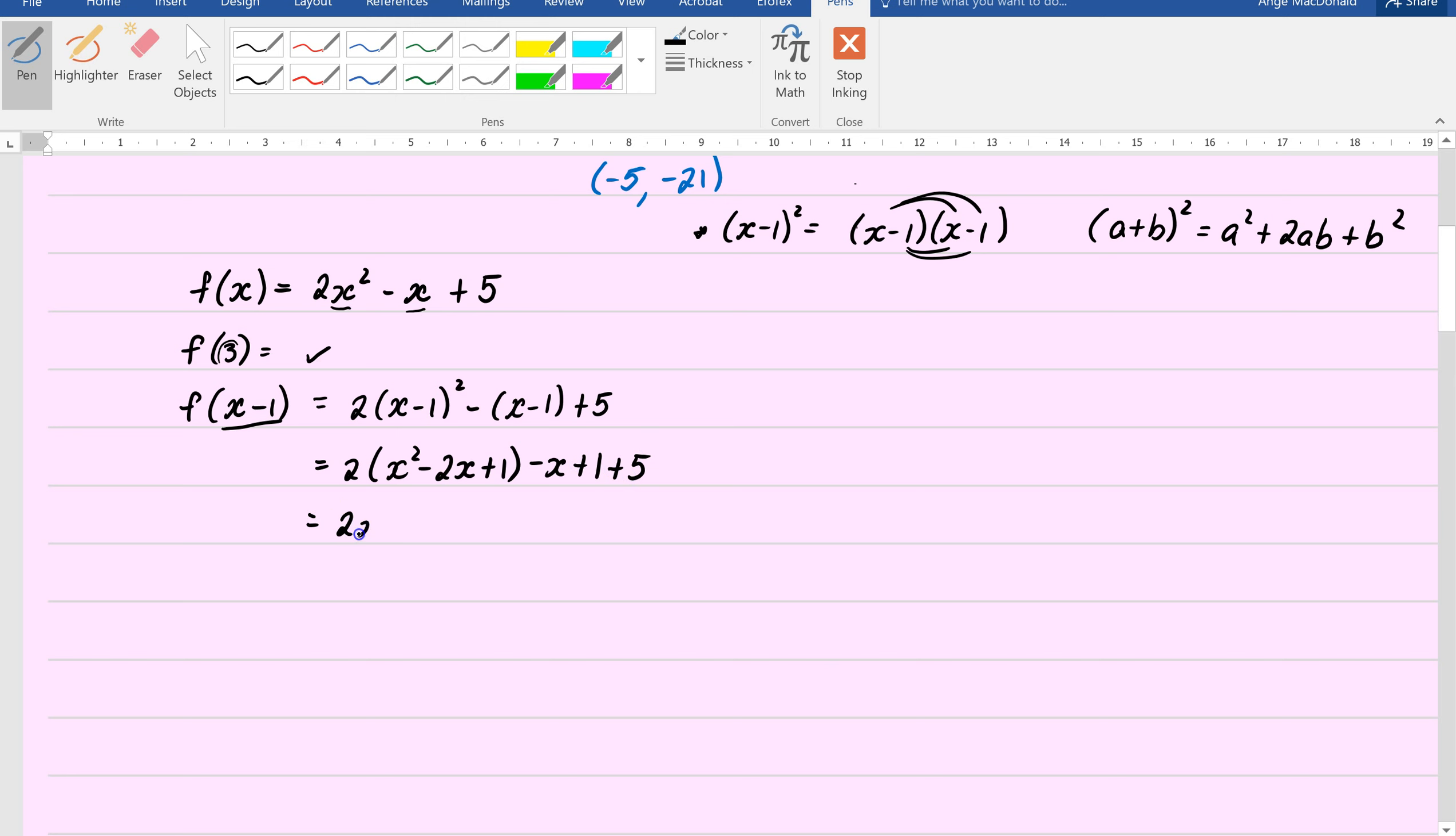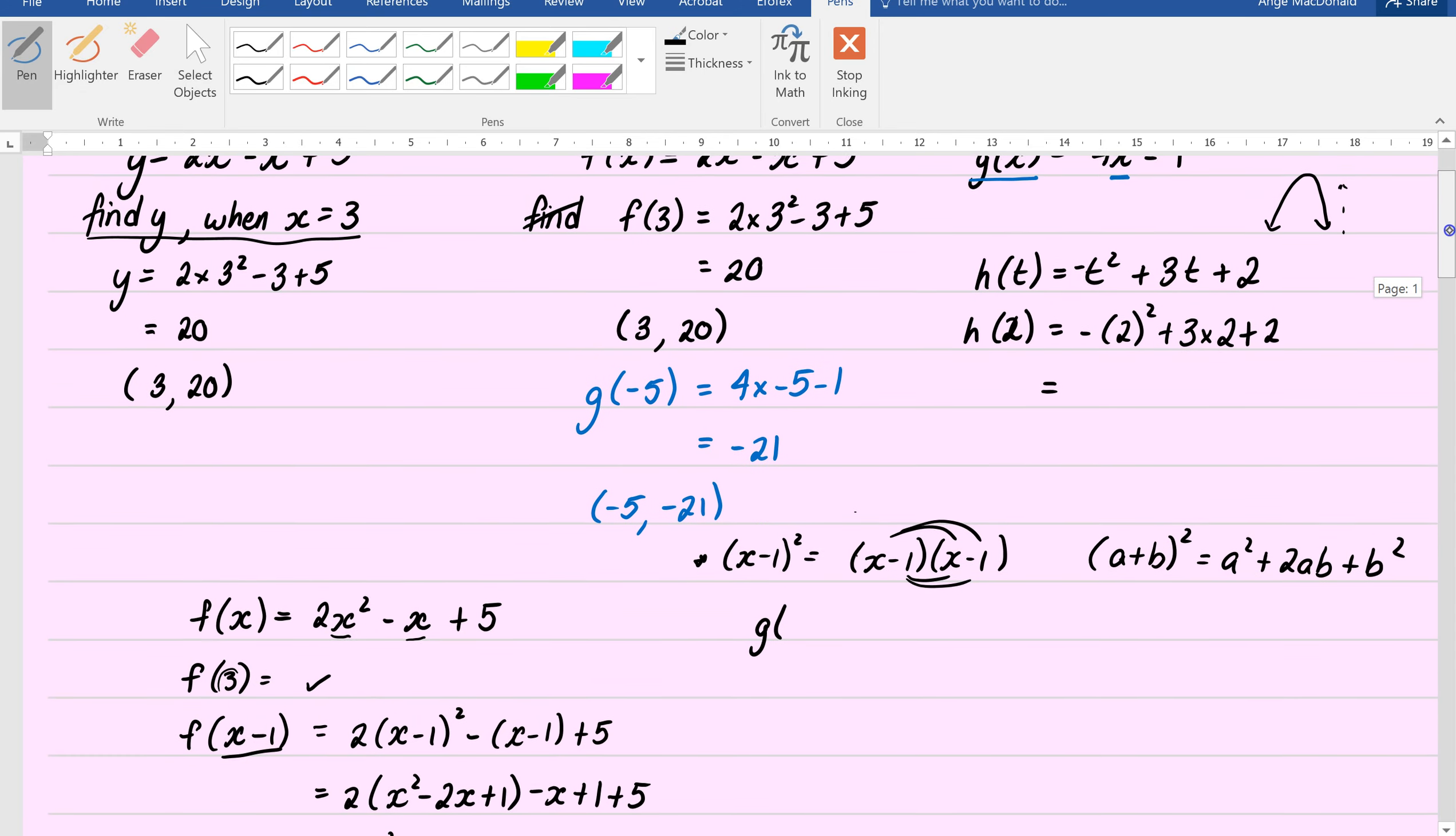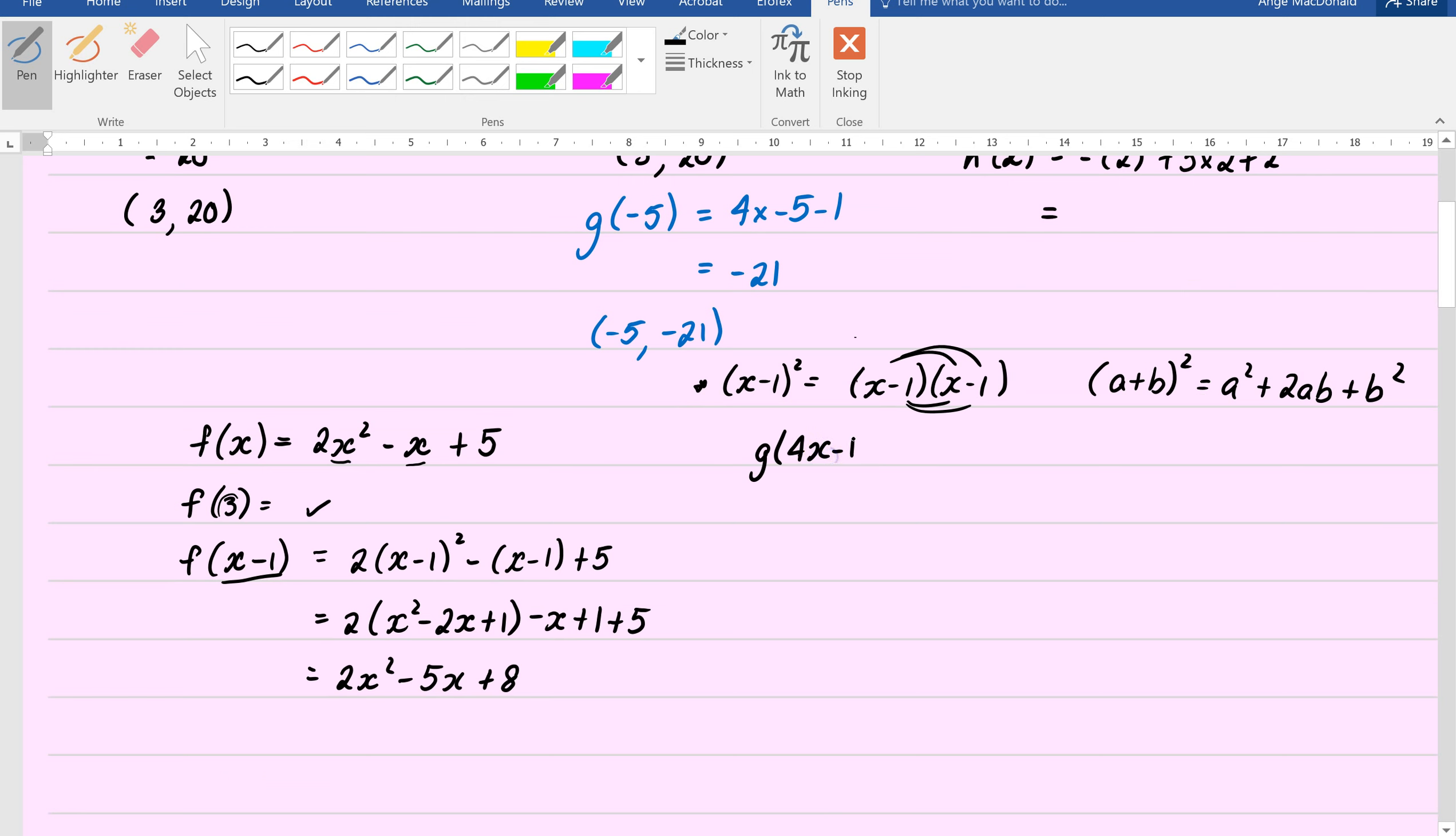x minus 1 squared is x take 1 times x take 1, and we expand like so. For those who remember the expansion rule, it's a squared plus 2ab plus b squared. I like to just go with this. Anyway, so this will be 2 times x squared minus 2x plus 1 minus x plus 1 plus 5, and then we can just gather our like terms. So we end up with 2x squared minus 4x take x is minus 5x. 2 times 1 is 2, 3, and we end up with 8, okay? So, you know, it's just about going back and substituting and reading what you want. And remember, when we have two different functions, make sure that you substitute in the correct one.